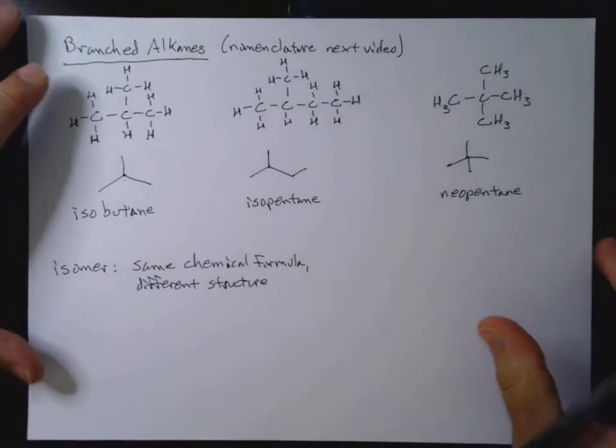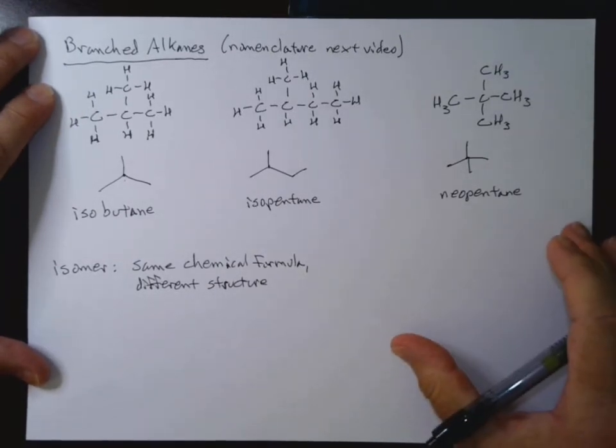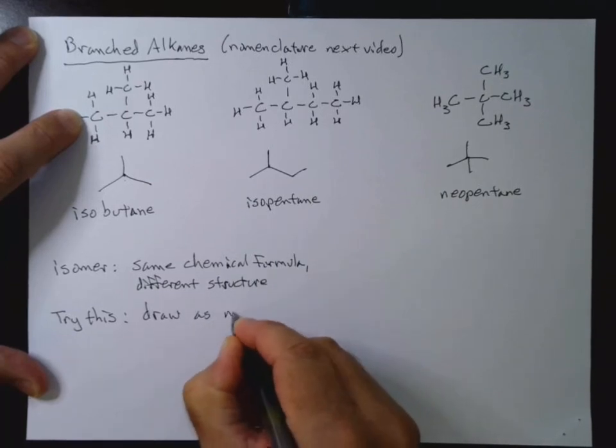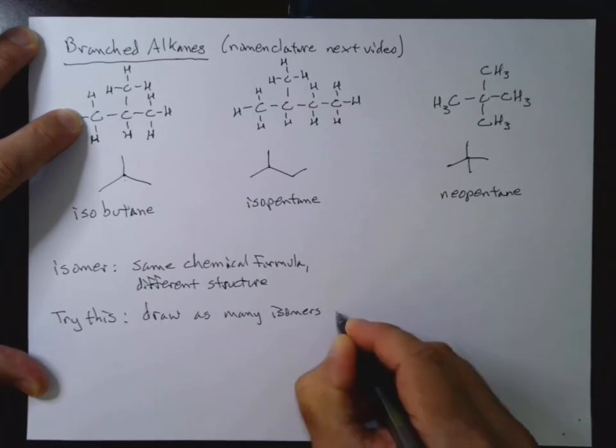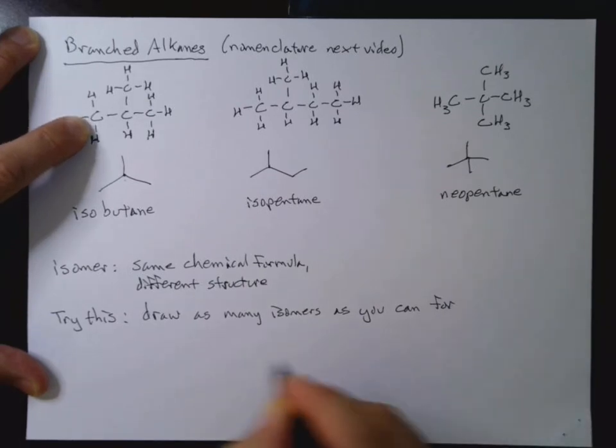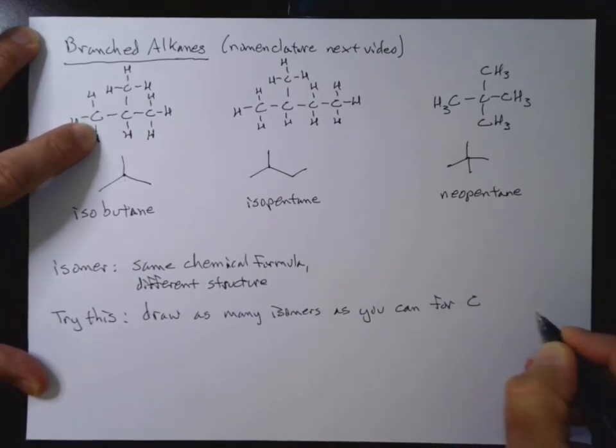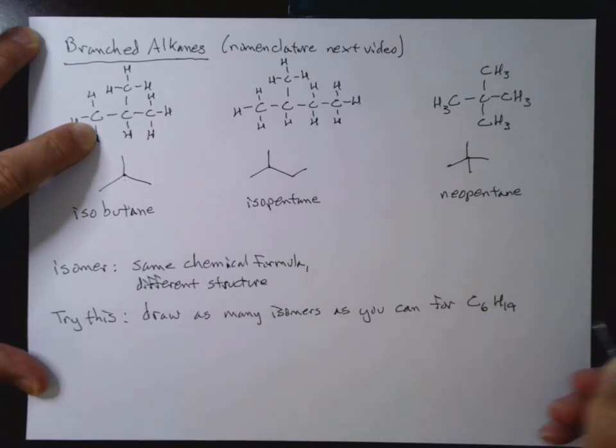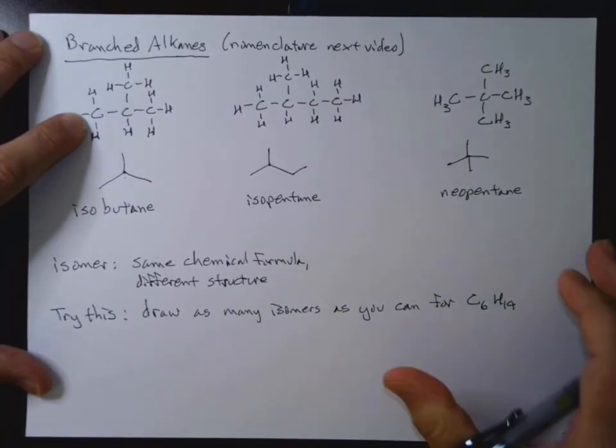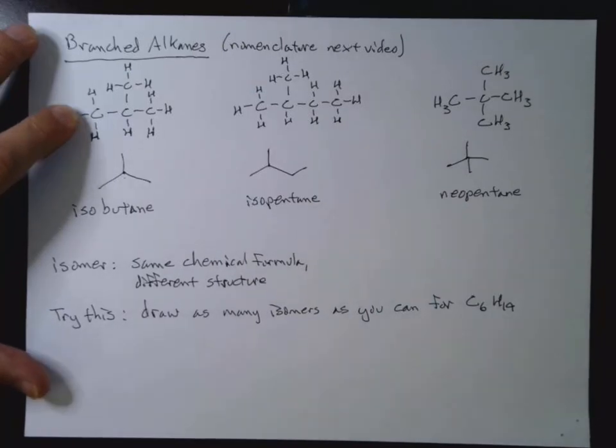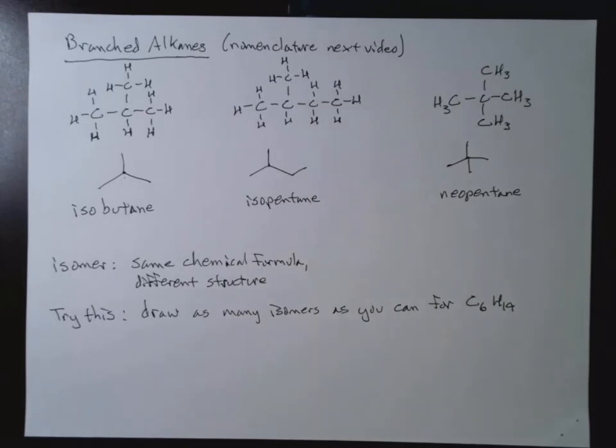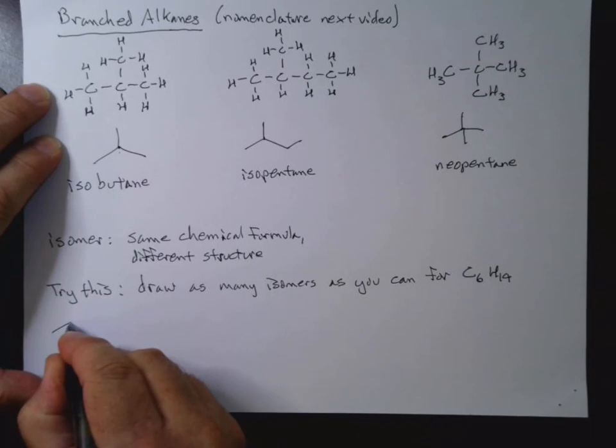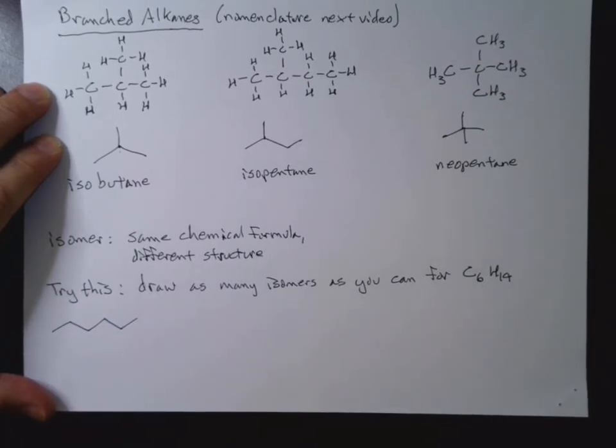Now one thing that you'll want to actually try doing is write different isomers, or rather draw different isomers for a given formula. As many isomers as you can for C6H14 for hexane. Now how do we go about doing that? Well, you can go about this systematically. We'll do another example in lecture, I think. And there are some examples on the end of chapter practice problems, which should be posted soon. So I can go ahead and draw out my initial one, one, two, three, four, five, six, like that.